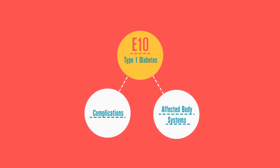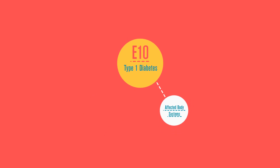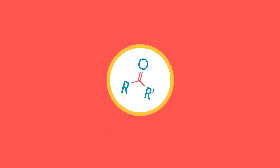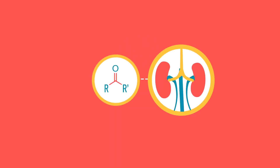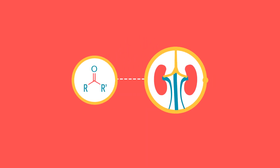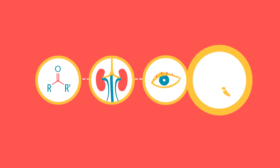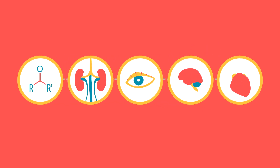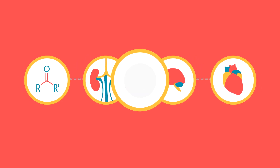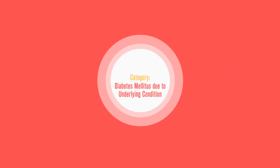To capture more details, subcategories can be added to represent both complications and affected body systems. For example, the diabetes subcategories include ketoacidosis, kidney complications, ophthalmic complications, neurological complications, and circulatory complications.